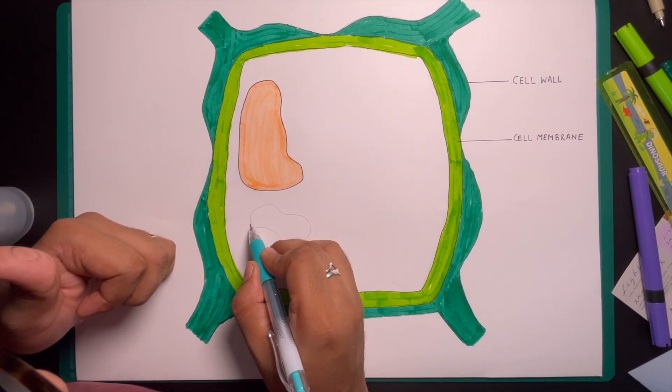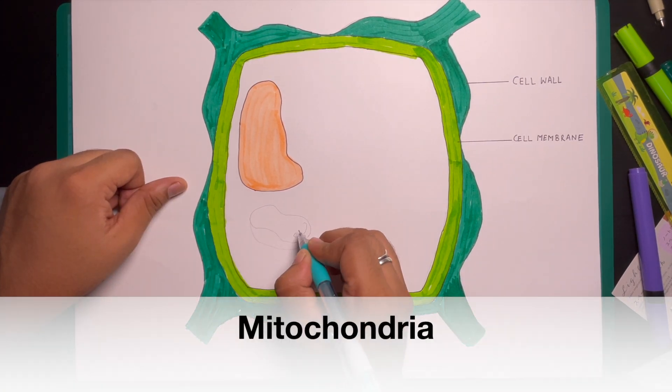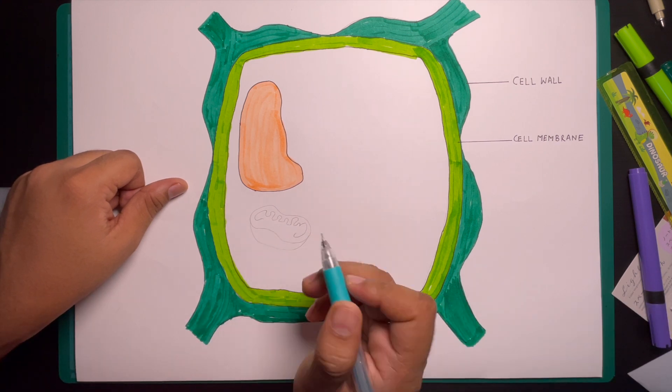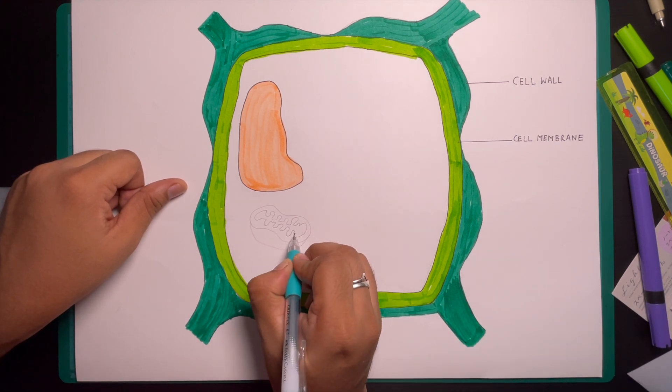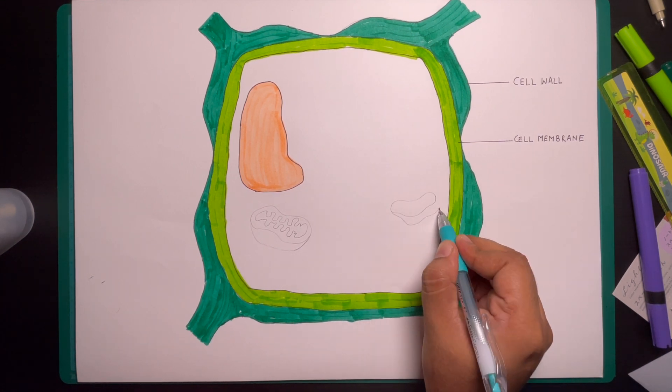Now let us see the next important organelle of plant cells that is mitochondria. It is enclosed by a double membrane and is scattered in the plant cytoplasm. Mitochondrias are of different shapes and sizes like spherical, rod, oval or even thread shape.